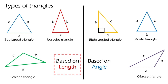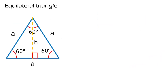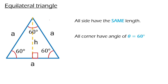The first triangle that we are going to discuss is equilateral triangle. As the name suggests, equilateral means same. Therefore, in an equilateral triangle, all the sides have the same length. Not only that, all the corners also have the same angle, which is 60 degrees. Why? Because we know that the sum of all internal angles inside a triangle is 180 degrees. Since there are three corners, we divide by three, and therefore we have 60 degrees.